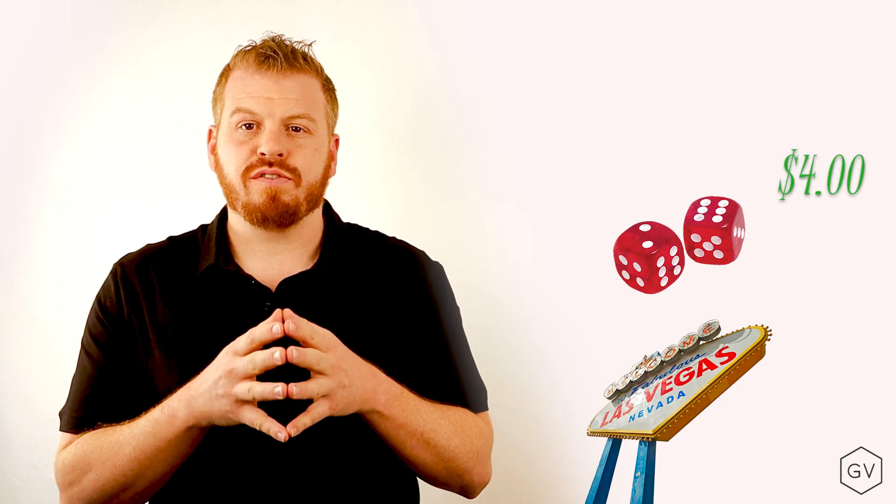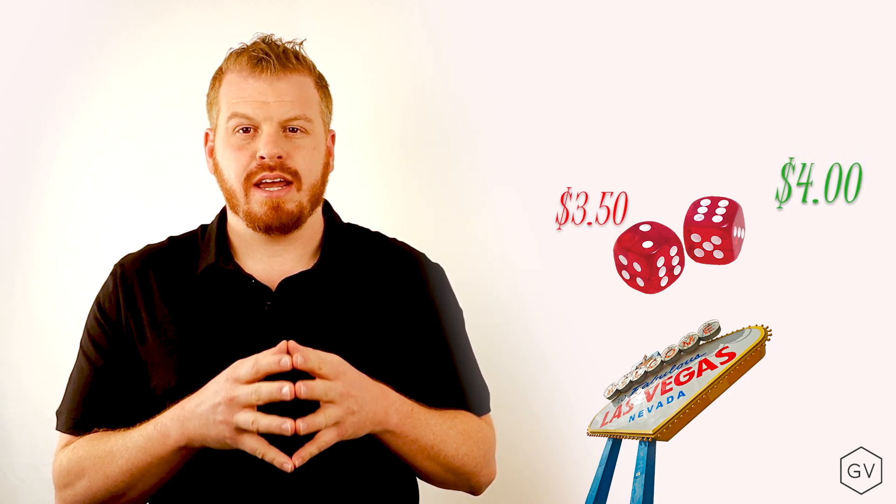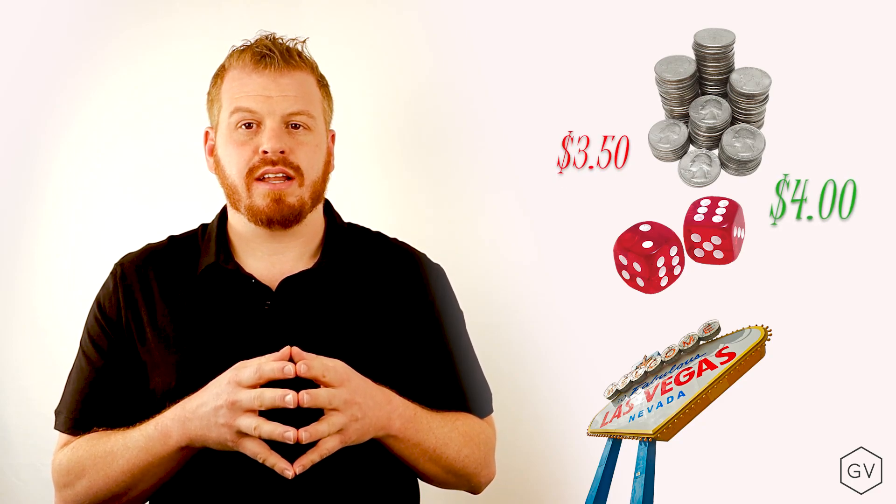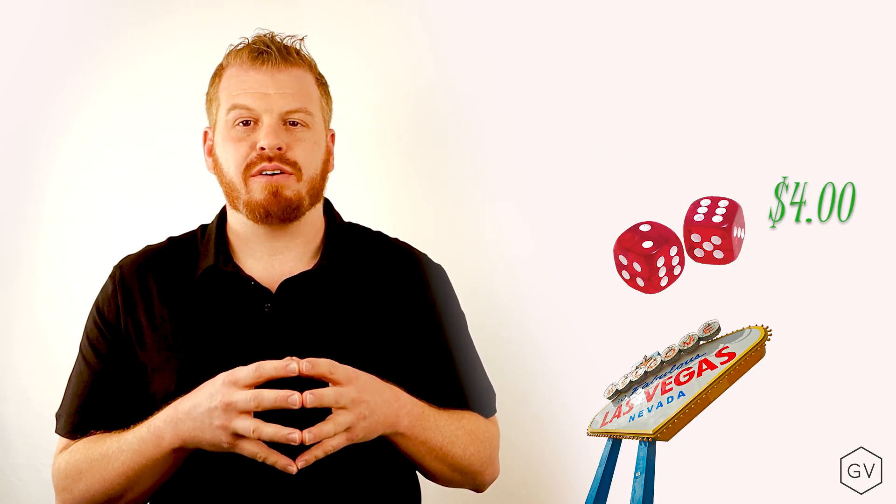If the casino says they want to charge $4 to play this game, in the long run, they're going to collect $0.50 per roll because they're going to collect $4 to play the game and they're going to pay out $3.50 in expected value. This is where expected value plays a role in profitability.